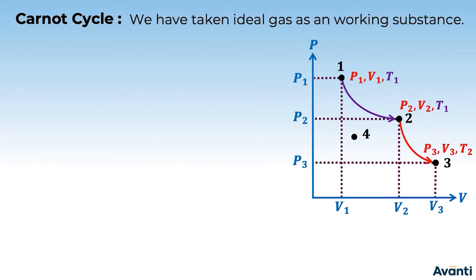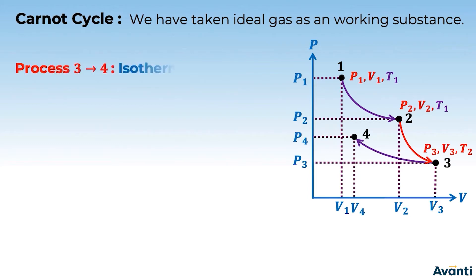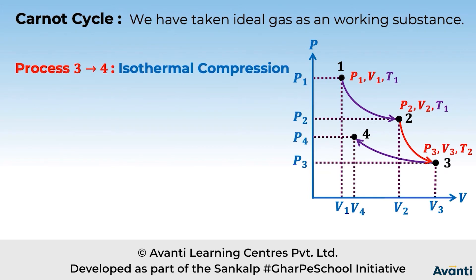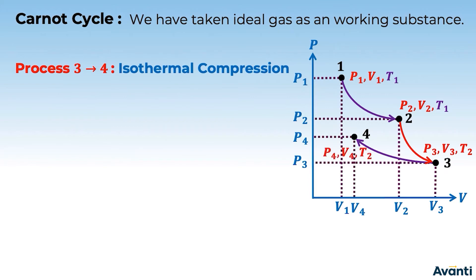We have done two expansion processes. To complete the cycle, we now need to start compressing the gas. The third process moves to point 4, where pressure is P4 and volume is V4. As you can see, this is a compression — volume is decreasing — and this compression happens isothermally, going from state 3 to state 4.